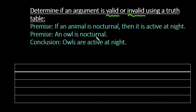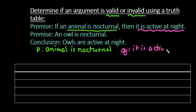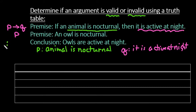The first thing we want to do is write this in symbolic form. An animal is nocturnal — I'm going to let that be P. Then I'm going to pick a second variable, Q, to represent the then part. Q is 'it is active at night.' So the first statement is telling us that we have if P, then Q. The second statement says an owl is nocturnal, so we have P, and we want to see if we can reach the conclusion — these three dots right here are read as 'therefore' — Q is true.